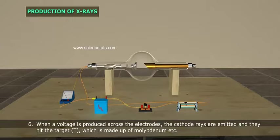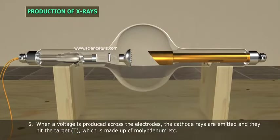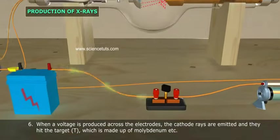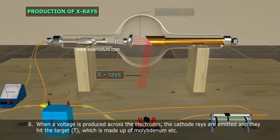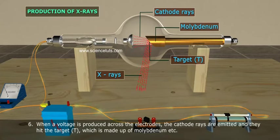When a voltage is produced across the electrodes, the cathode rays are emitted and they hit the target T, which is made up of molybdenum.